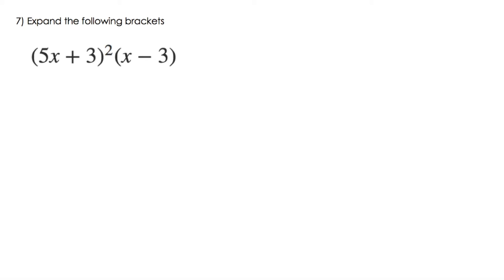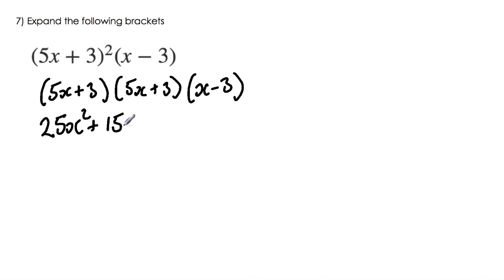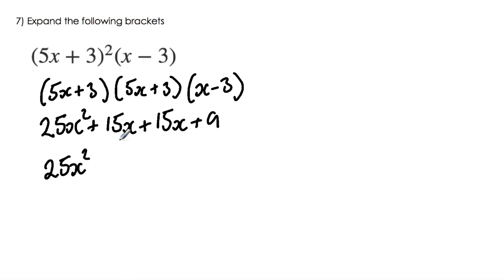Question 7: expand (5x + 3) squared times (x - 3). First I'm going to rewrite the question as (5x + 3)(5x + 3)(x - 3). Expanding the first two brackets: 5x times 5x is 25x squared, 5x times 3 is 15x, 3 times 5x is 15x, and 3 times 3 is 9. Collecting like terms: 25x squared plus 30x plus 9.